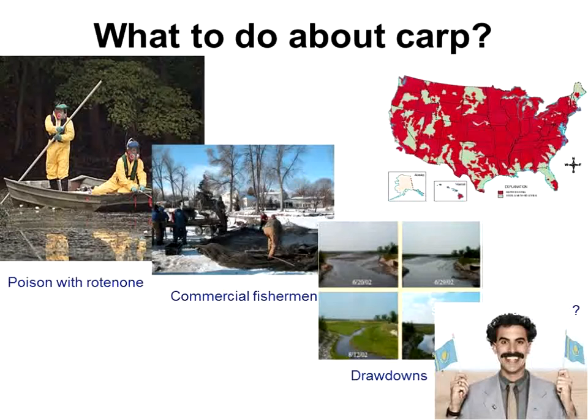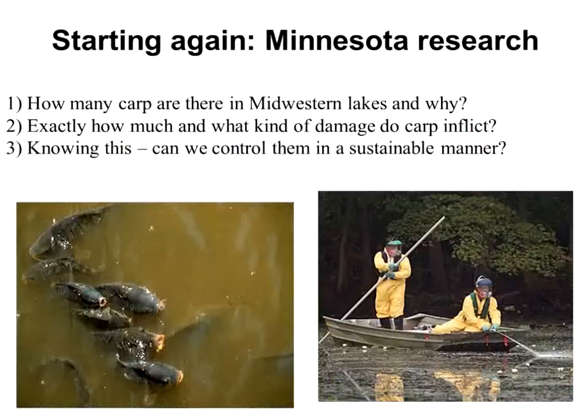People have been wondering what to do about common carp for a very long time, and they've been a good model for understanding invasive fish in general and now Asian carp. People have pursued the obvious approaches — rotenone poisoning, fishing out, drawdowns — but these have generally not worked and have been going on for decades. In 2006, my lab started working on common carp. People didn't even know how many there were or what kind of damage they were causing, let alone how to control them.